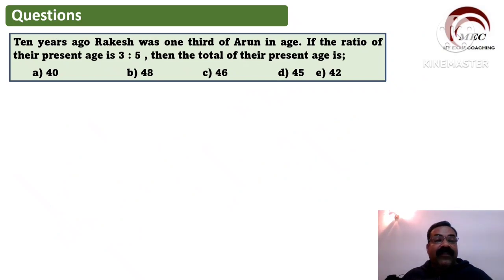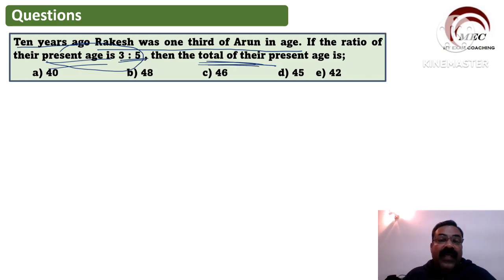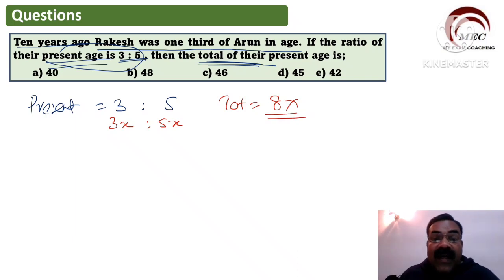The next question: 10 years ago, Rakesh was one-third of Arun's age. The ratio of their present ages is 3:5. Find the total of their present ages. These types of questions are very very important. The present age ratio given is 3:5, so let us take their present ages as 3x and 5x. The total present age will be 8x, so we need to find the value of 8x.